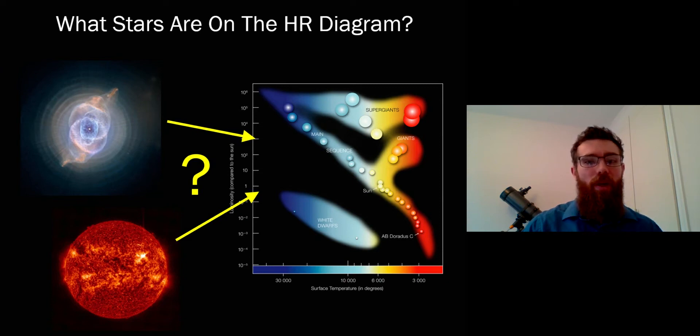Welcome to this short video. In this video we're going to have a look at the HR diagram, which is the Hertzsprung-Russell diagram, and where some stars actually sit on it and why they might actually sit there.